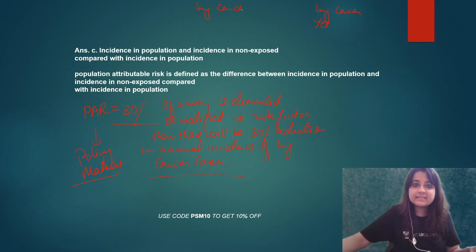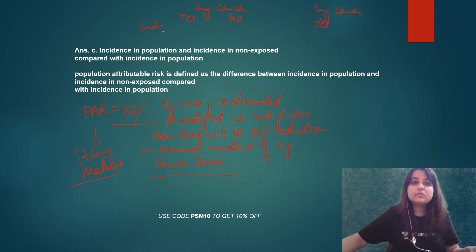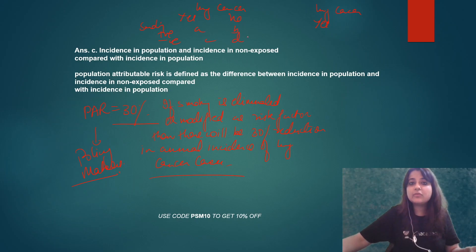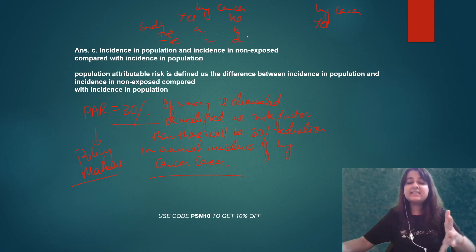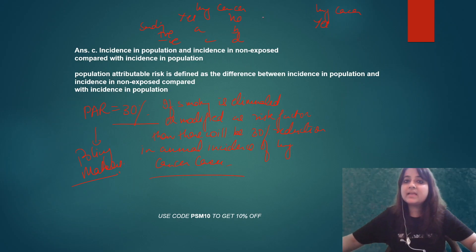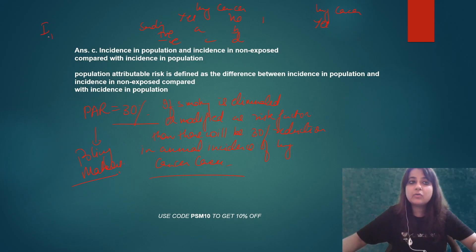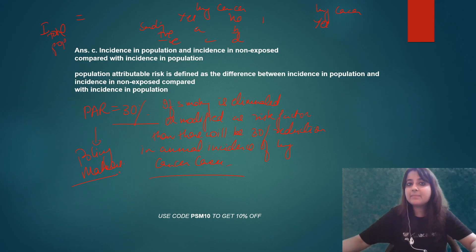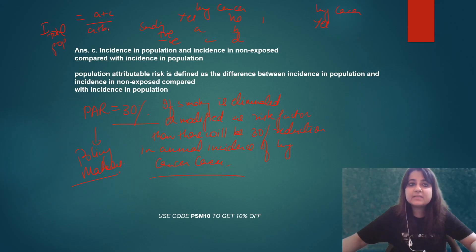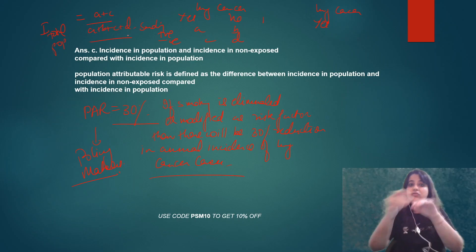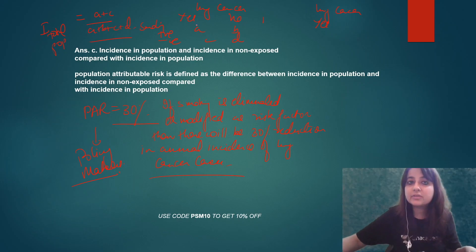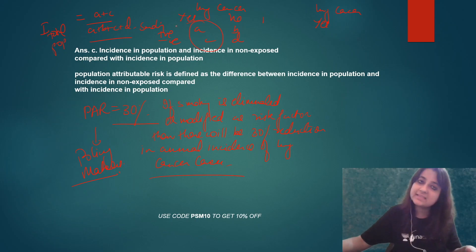Let's write it here. Lung cancer — this is yes, this is no. And we are studying smoking: present, not present. This gives us cells A, B, C, D. So what will be the incidence in the total population? Incidence among total population is A plus C divided by A plus B plus C plus D. Total population me incidence lung cancer to A plus C.